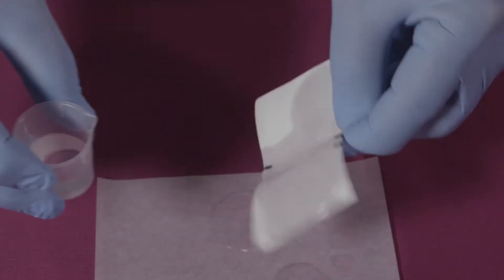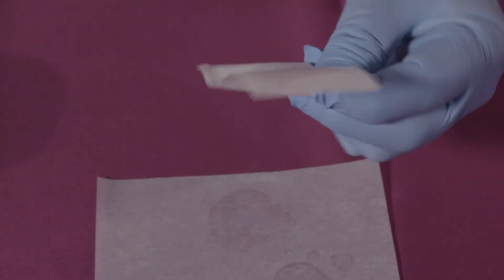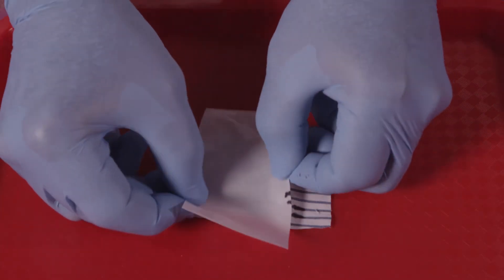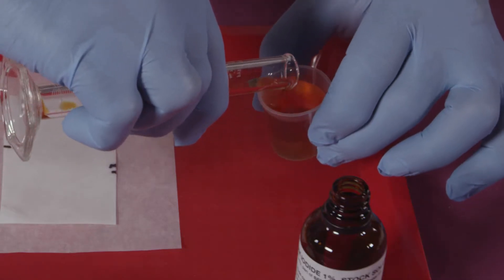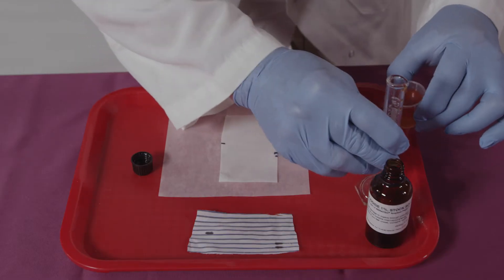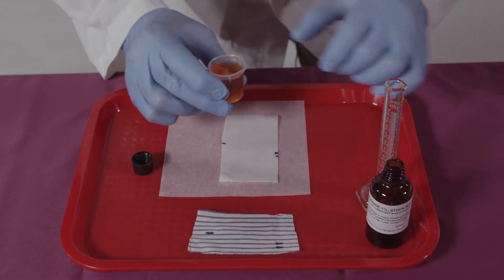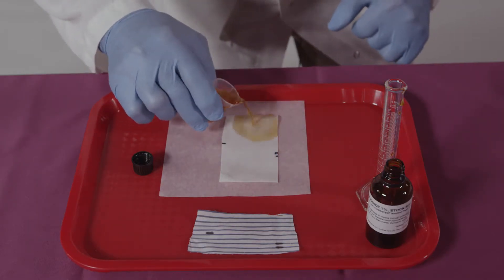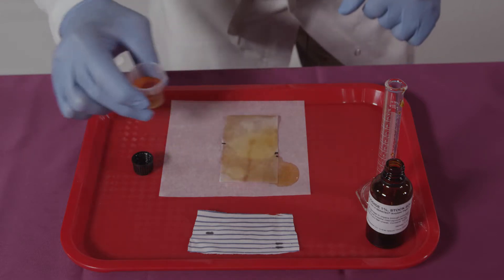Ceratec amylase paper contains starch and when moistened and overlaid upon a dried saliva stain, amylase in the stain digests the starch in the paper. After a short incubation at room temperature, a solution of iodine is applied and developing white areas on the paper indicate the presence of the enzyme amylase or saliva.